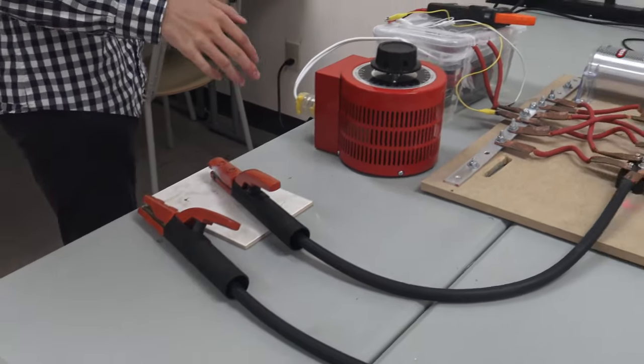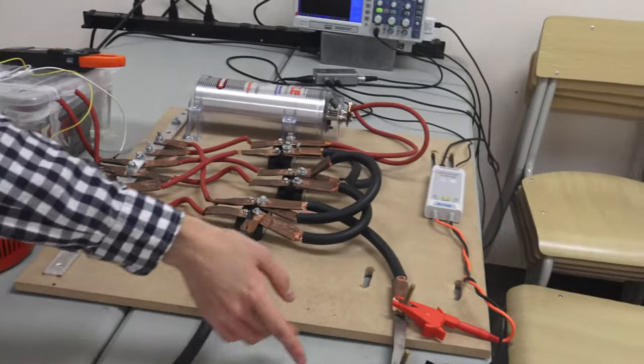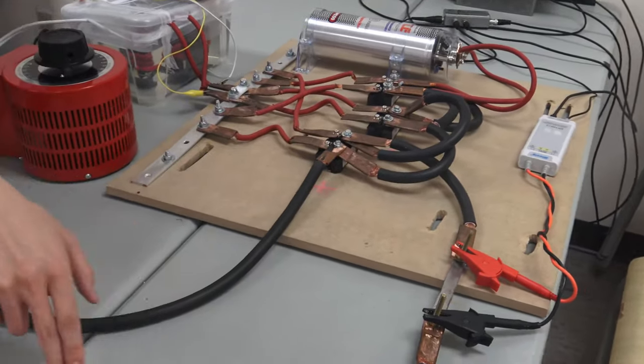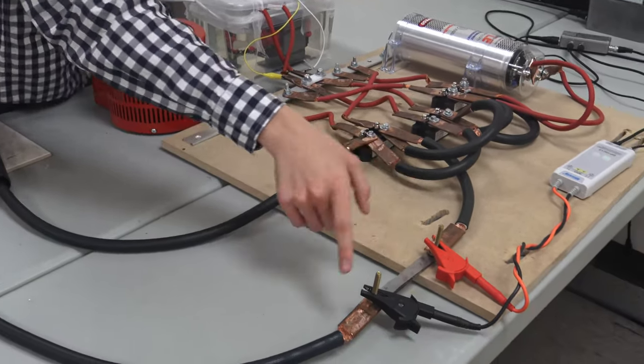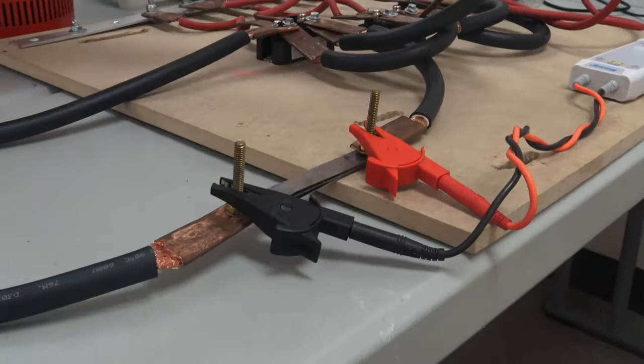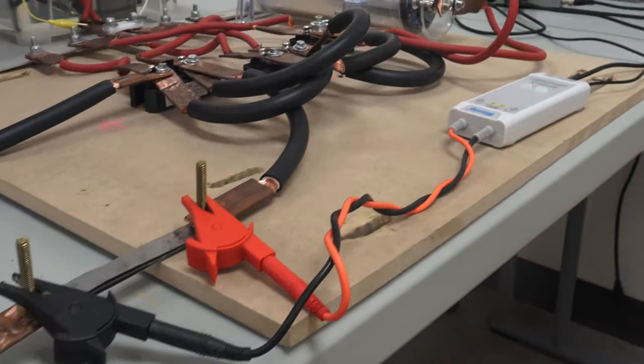So then on the measurement side we want to be able to determine the amount of current that flows through our system. So what we have here is that the shunt on two sides of it has the differential probe connected to it.